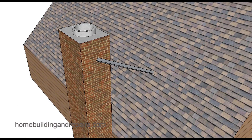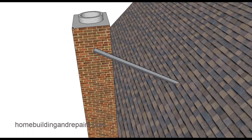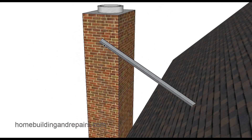If you don't relocate the chimney, you might need to use some type of bracing. You see this every once in a while — a tall chimney with a brace attached to it from the roof. Sometimes there will be a metal band going around the chimney that these metal braces attach to.